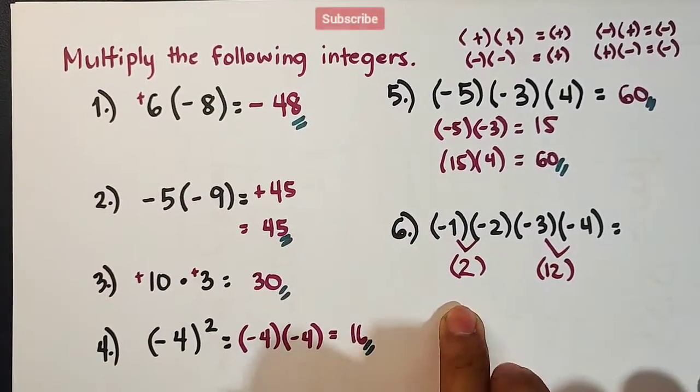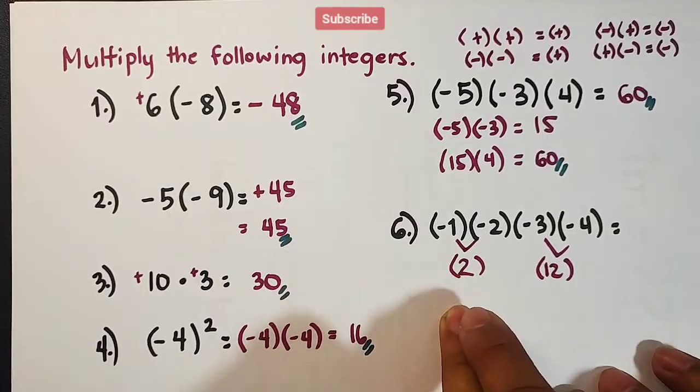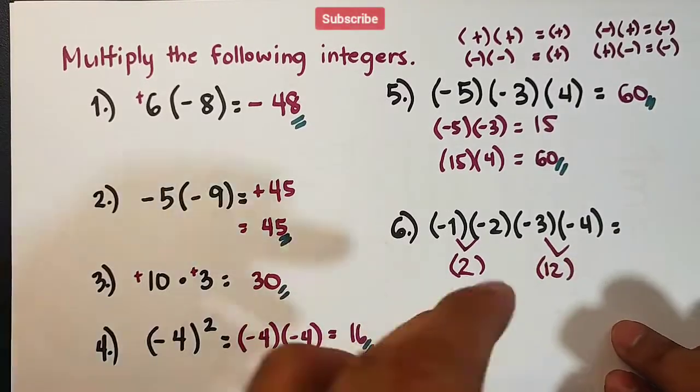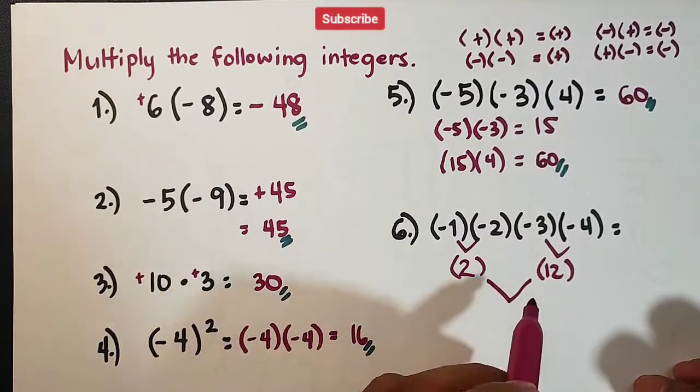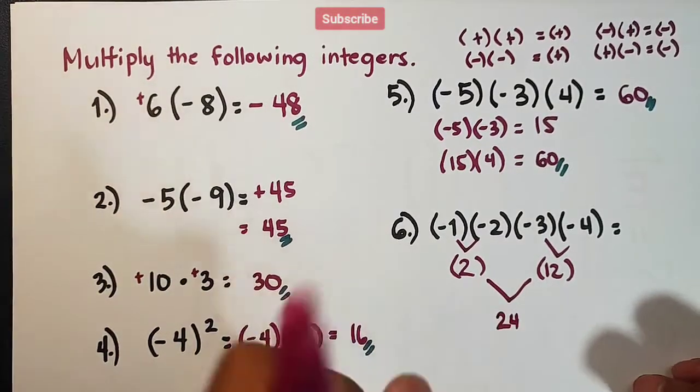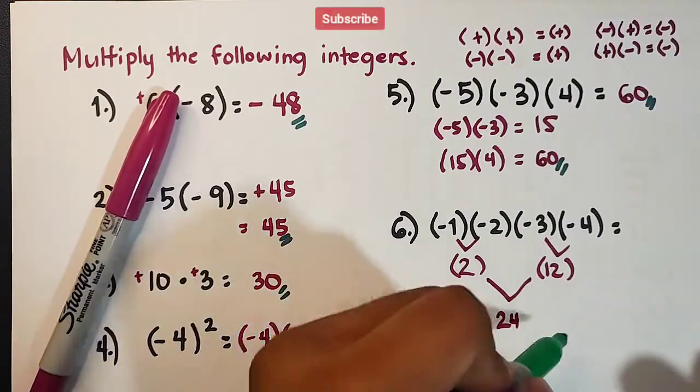So, as you can see, we simplified them by pair. And we can still multiply these two integers. 2 times 12, that is equal to 24. And, we can consider this as final answer.